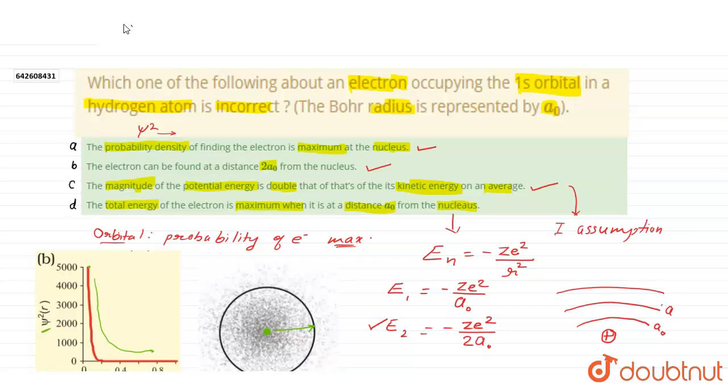If it is A0, then it is 2A0, it means, this is incorrect statement, the total energy of electron is maximum, when it is at a distance A0 from the nucleus. It is incorrect statement, and we have to find incorrect statement, that's why our answer is D.